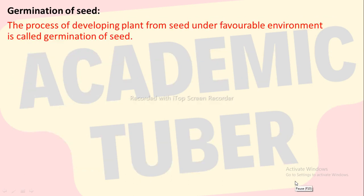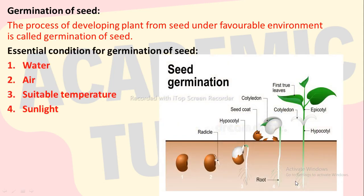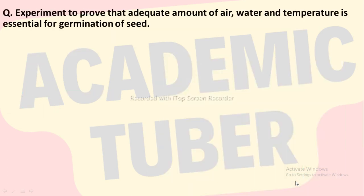Germination of seed. The process of developing plants from seed under a favorable environment is called germination of seed. The essential conditions for germination of seed are water, air, suitable temperature and sunlight. We are going to perform one experiment to prove that an adequate amount of air, water and temperature is essential for germination of seed.